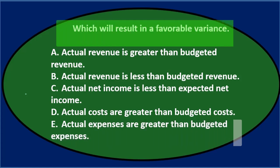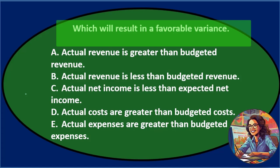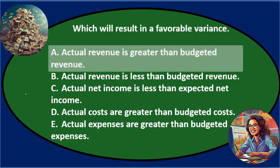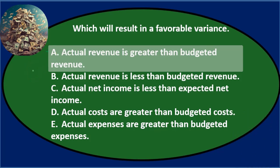Which will result in a favorable variance? When you think of variance, we're thinking about a difference — comparing budget to actual, and thinking about what's good news. Good news means we performed better than we budgeted. A says actual revenue is greater than budgeted revenue. Well, that's good news — what actually happened is greater than what we budgeted to happen, so that seems like a favorable difference.